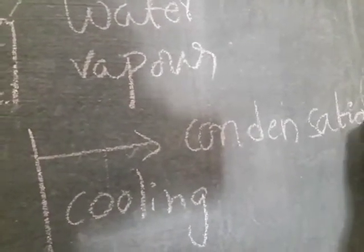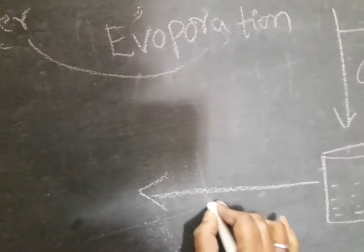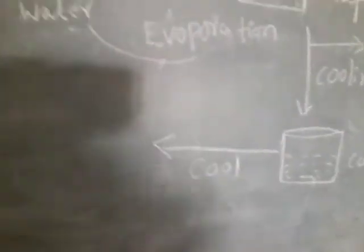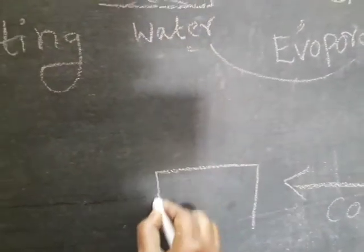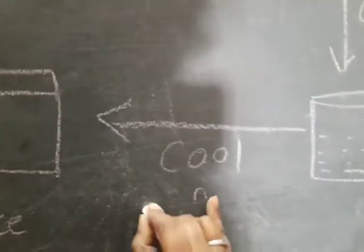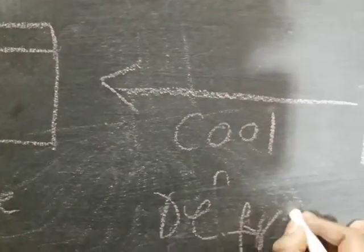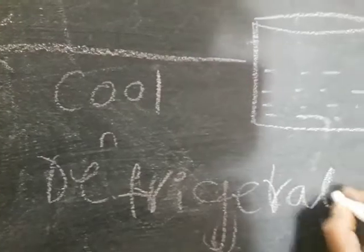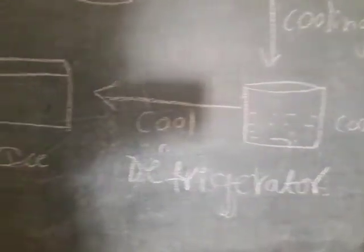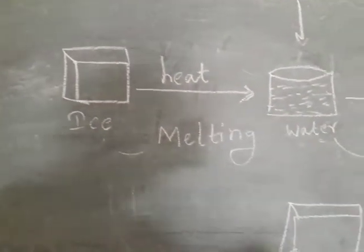Condensation. Now, this cool water, when we freeze it — keep it in the refrigerator — it is converted back into ice cubes. This cool water kept in the refrigerator is converted into ice cubes.